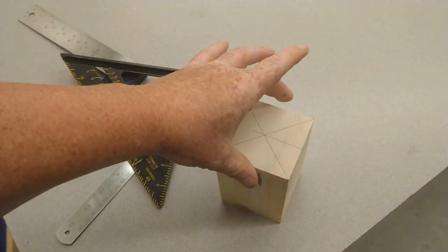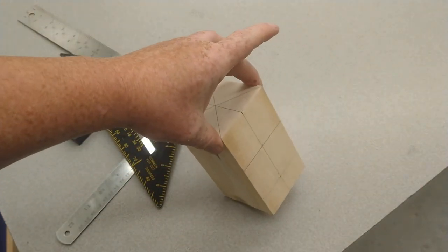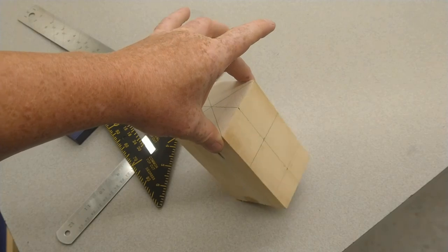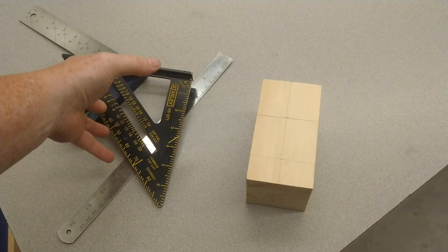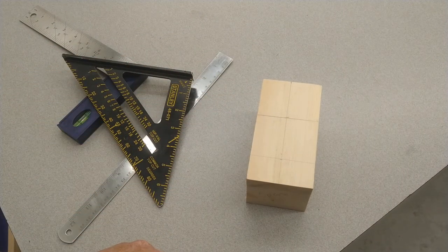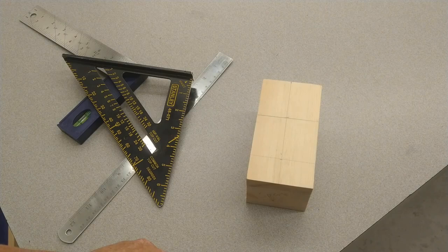That is the layout for the gumball machine body. Everyone should do it together. When you're done, slide your block up to another block and see if the lines match. If they don't, you did something wrong.